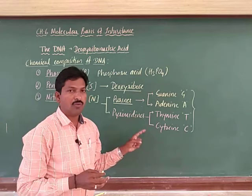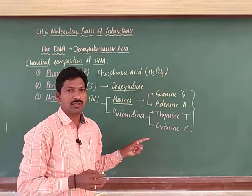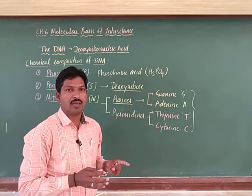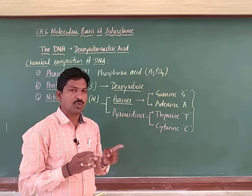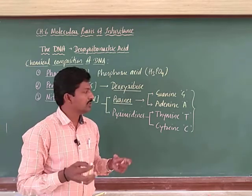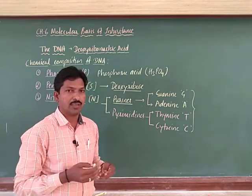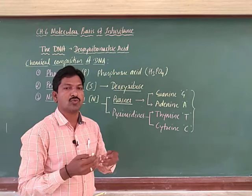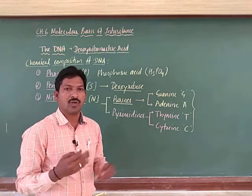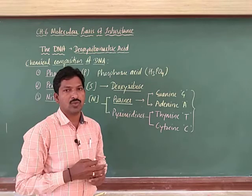Four types of nucleotides are bonded by phosphodiester bonds, meaning the molecules bind together to form a chain, which is called a polynucleotide chain — that is what we call DNA.